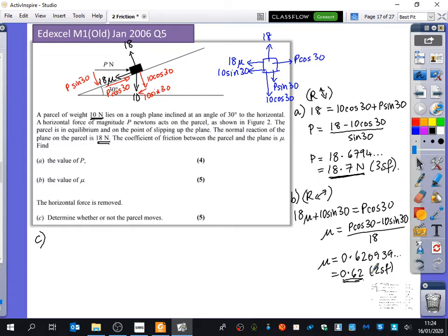Okay, it then says that the horizontal force is removed, and we want to determine whether or not the parcel moves. Now this is a five mark question. When you look at five marks, you should probably think, okay, there's got to be some thinking that needs to be done here. Probably in the new spec, this would be three marks, because they've just reduced the number of marks for everything to make life harder for you.